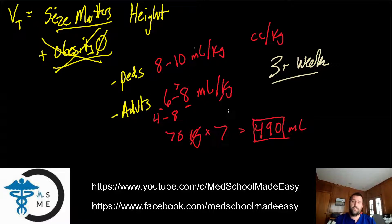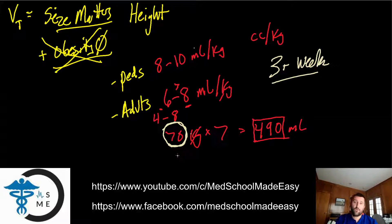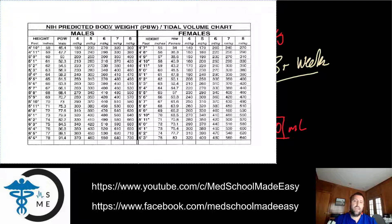How do you figure out what is their ideal body weight or their predicted body weight based on their size? Obesity is a big issue worldwide. You can get on Google — that's what I recommend. In daily practice I have charts that I use; you can find those charts with a quick Google search. I'm going to show you a NIH predicted body weight to tidal volume chart.